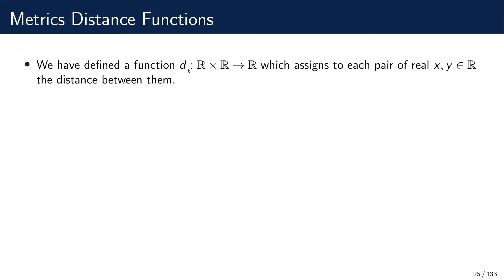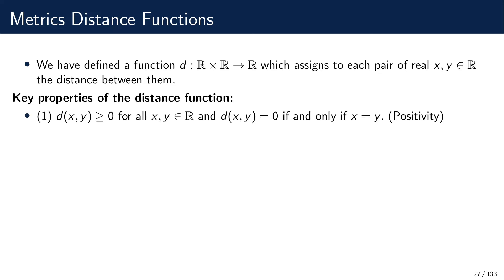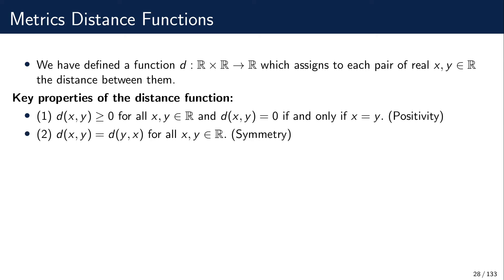What we have done is defined a function that takes a pair of real numbers and assigns a real number to them which is positive — the distance between x and y. What are the key properties of this distance function? Property number one is that it's clearly non-negative, because it's the absolute value. We expect that the distance between any two entities would be non-negative, and we want the distance to be zero only in the case where the two entities are the same. This property is called positivity.